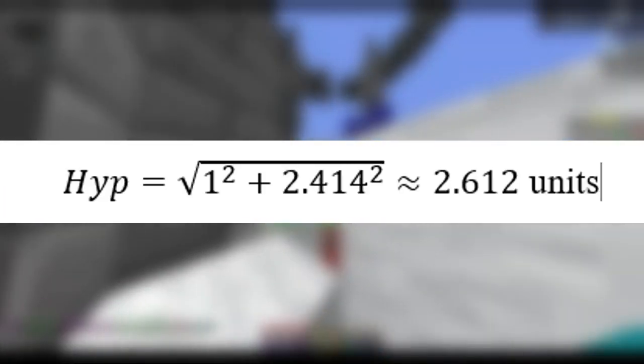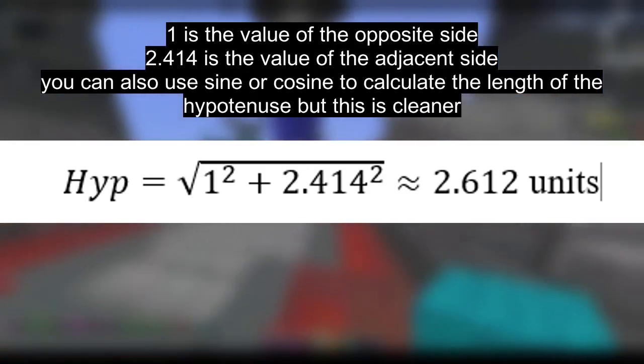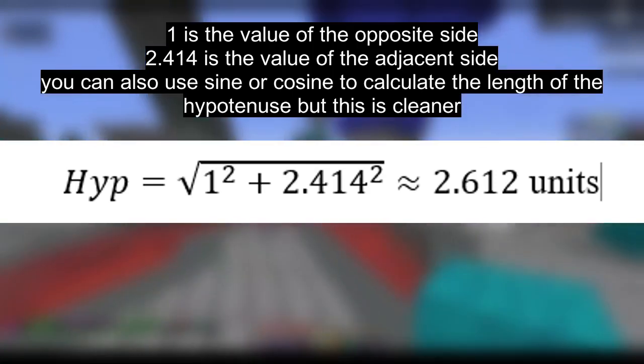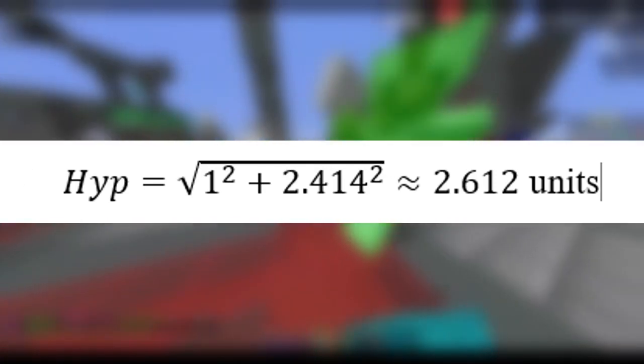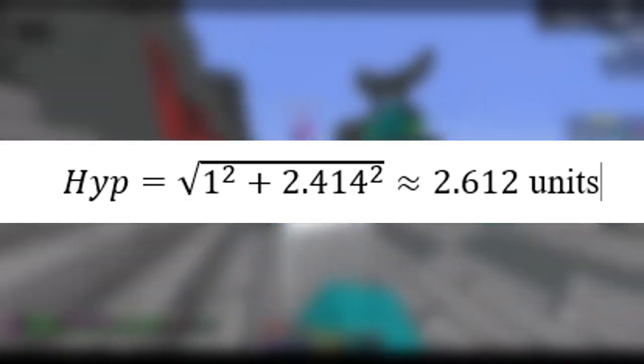Then we can find the hypotenuse by using the popular Pythagorean theorem where it is equal to the square root of the sum of the squares on the adjacent and opposite side. We get the square root of 1 squared plus 2.414 squared, rounding off to 2.612 units.